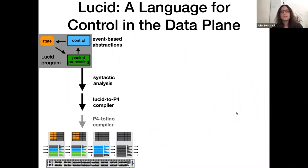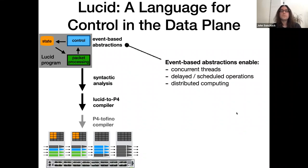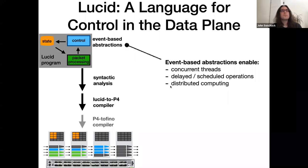Lucid is a language we're designing as a solution — a high-level language for writing data plane programs with integrated control that compile to the Tofino. There are really three interesting parts of Lucid. The first part are the abstractions that Lucid introduces, which make it a lot easier to express control in the data plane. Lucid introduces an event-based programming model and a few very simple primitives that make it a lot easier to express concurrent threads, scheduled operations, distributed computation, and more.